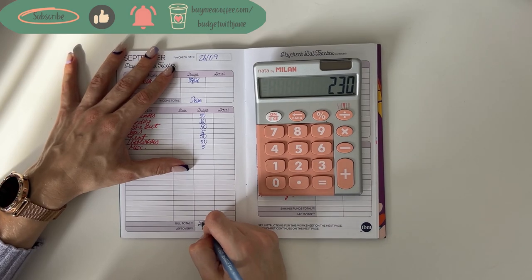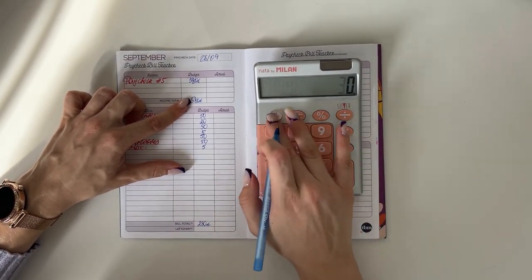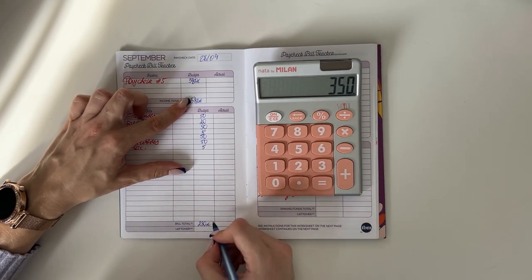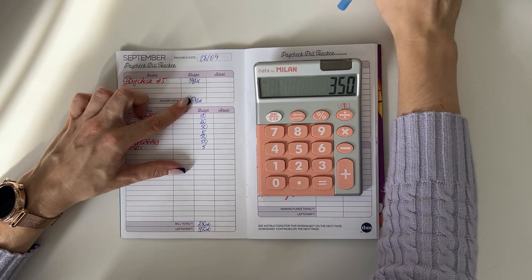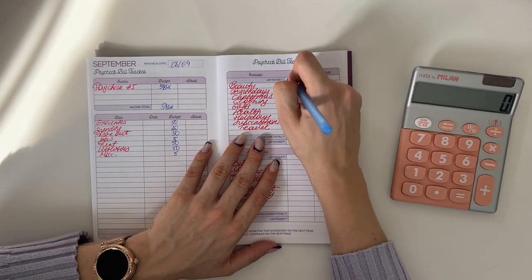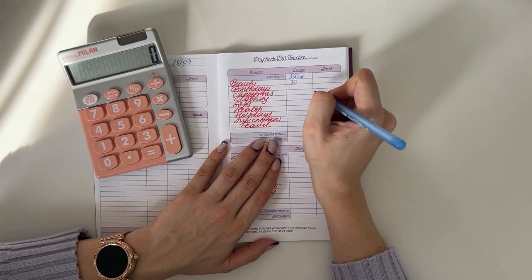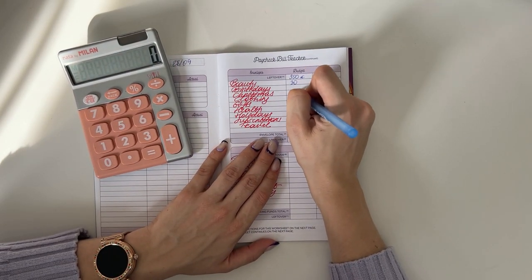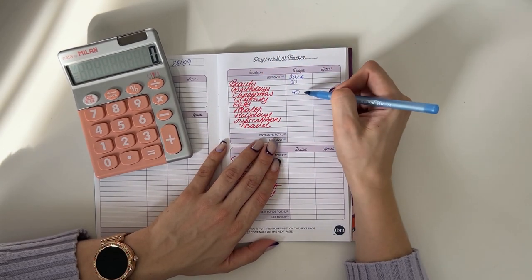So in total that's gonna be $230. So $580 minus $230 is $350 perfect. Then we have $350 here in short-term sinking funds. So I'm gonna put $30 in beauty, I'm gonna put $40 in Christmas, which is the last $40 we need to be fully funded for the year, so that's exciting.